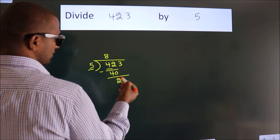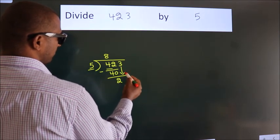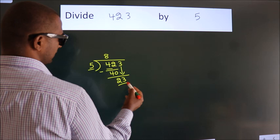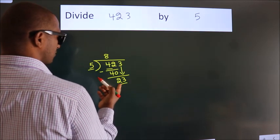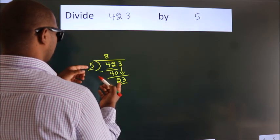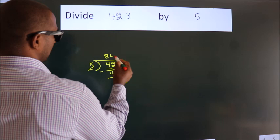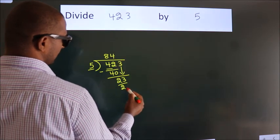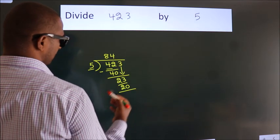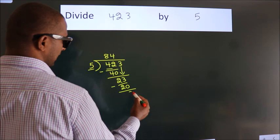After this, bring down the beside number. So 3 down, so 23. A number close to 23 in 5 table is 5 fours 20. Now we subtract. We get 3.